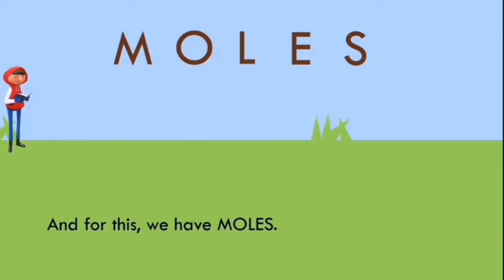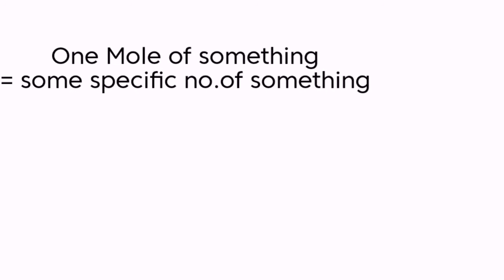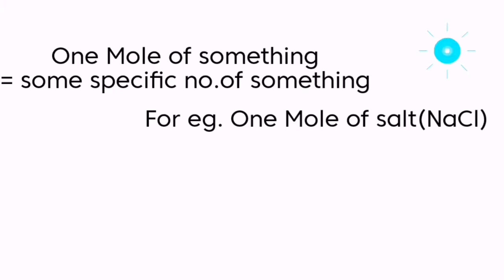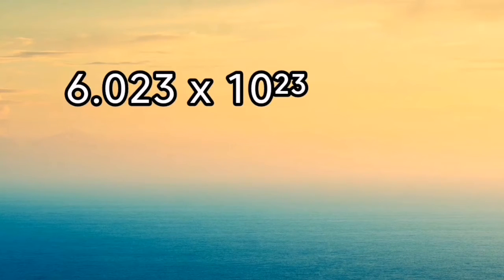How much is one mole? One mole of something means some specific number of that something. For instance, a mole of salt NaCl means 6.023 × 10²³ molecules of NaCl. This number, 6.023 × 10²³, is called the Avogadro number, abbreviated as NA.